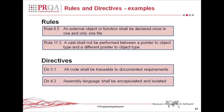Directives, on the other hand: directive 3.1 — all code shall be traceable to documented requirements — is effectively a process requirement; it is not in essence a property of the source code, but nevertheless an important requirement. Directive 4.3 — assembly language shall be encapsulated and isolated — certainly relates to the source code, but is loosely defined in the sense that the directive does not precisely define what is meant by encapsulation or isolation. It is not a guideline that is precisely defined, so we exclude it from the set of rules and call it a directive. The principle is good, but the specification is left to a certain amount of interpretation.